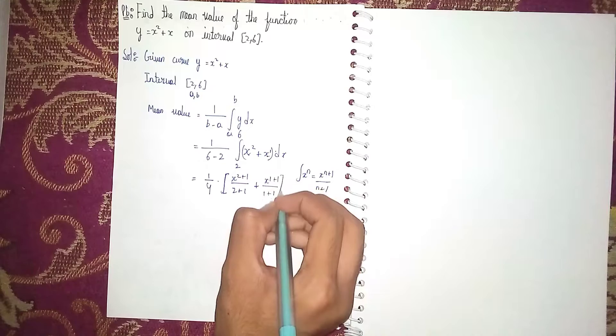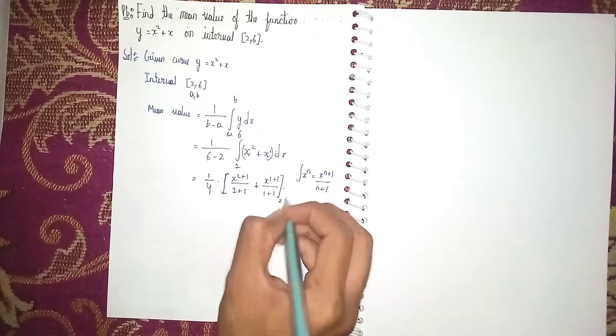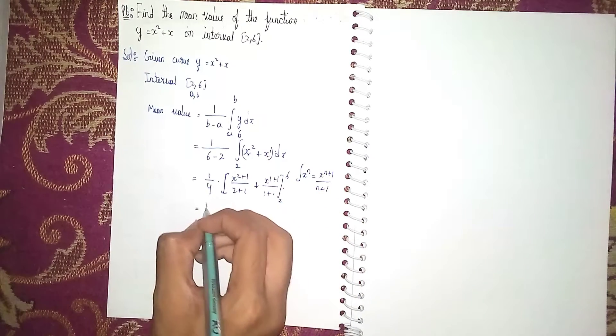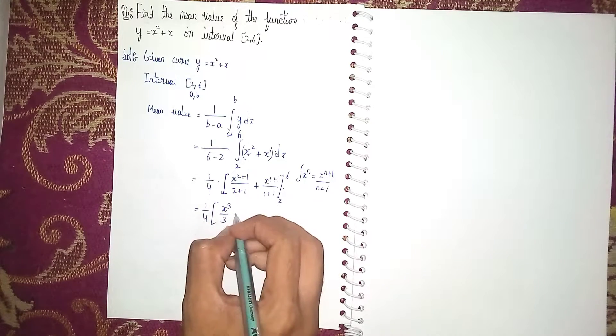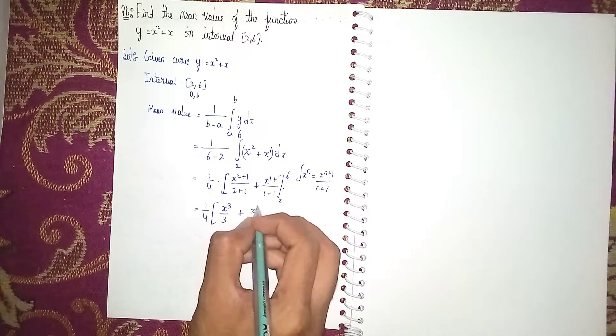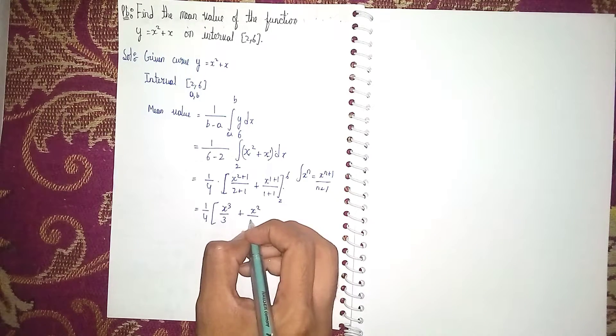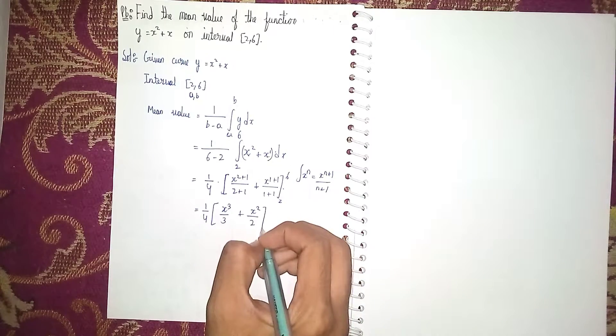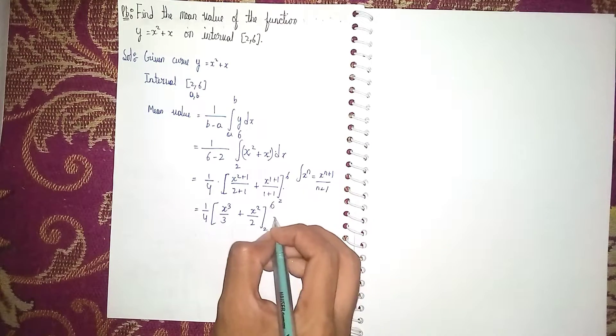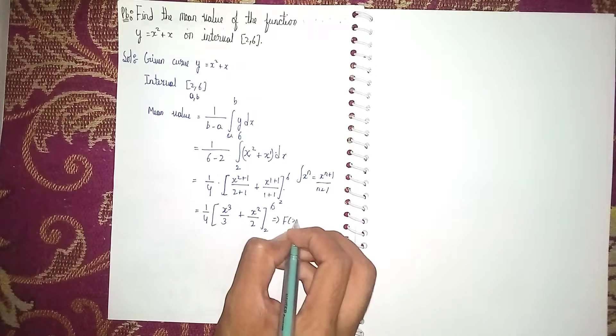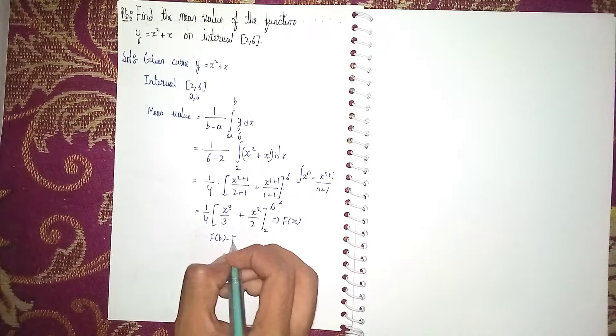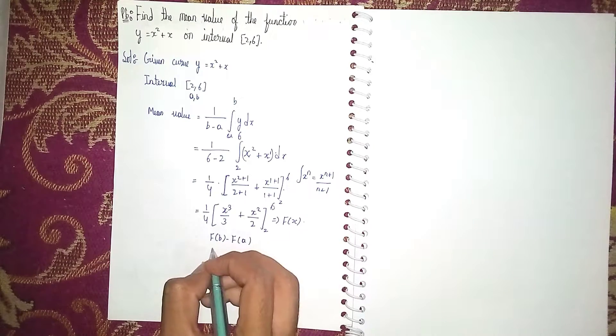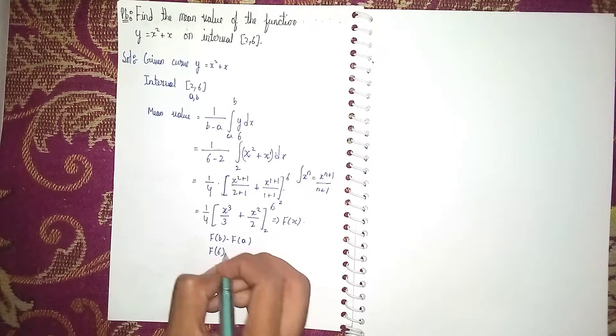1/4 × [x³/3 + x²/2] with limits 2 to 6. This is our f(x). Now apply the limits: f(b) - f(a), where upper limit b = 6 and lower limit a = 2.